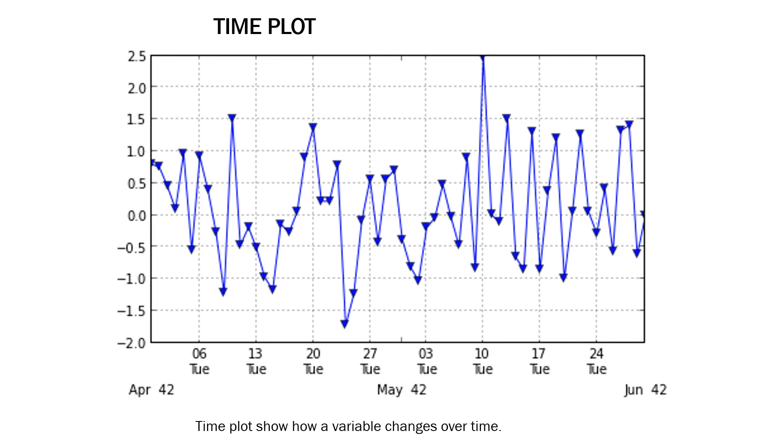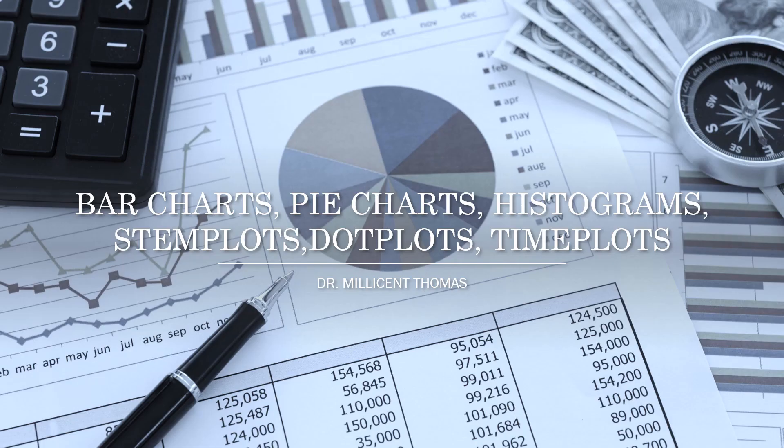We have a bar graph, pie graph, histogram, dot plot, stem and leaf plot, and time series to describe the data. In this video, we learned what is a bar graph, pie chart, histogram, stem plot, dot plot, and time plot. Hope this video was helpful. Thank you for listening and thank you for watching.